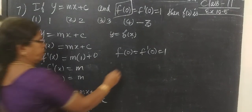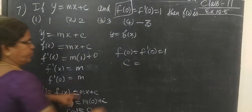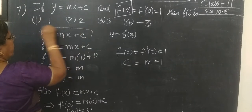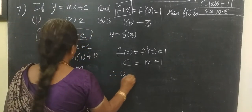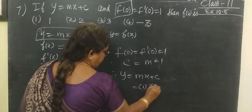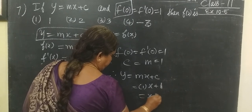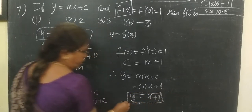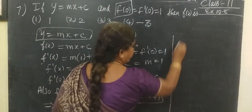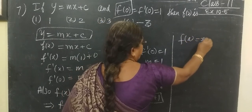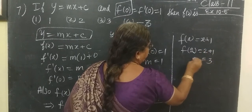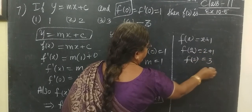So f(0) is c, meaning c equals 1. Also, f'(0) equals m equals 1, so m equals 1. Therefore y equals mx plus c becomes x plus 1. So f(x) equals x plus 1. We want to find f(2): f(2) equals 2 plus 1 equals 3. So f(2) equals 3.